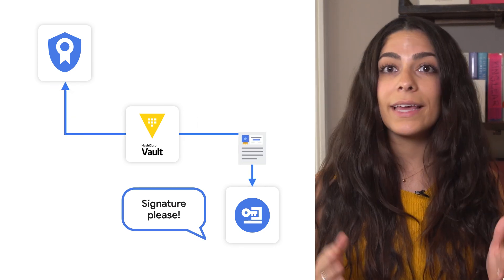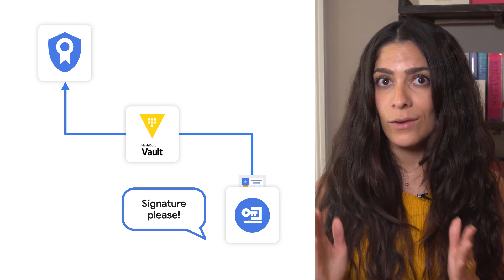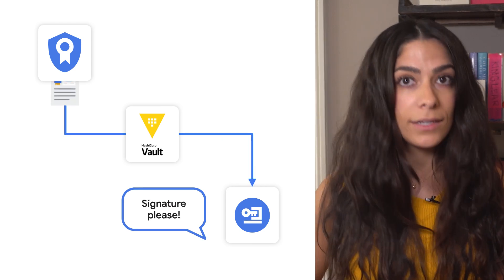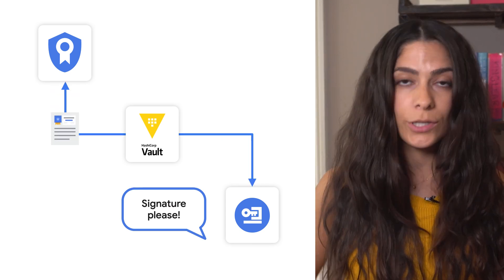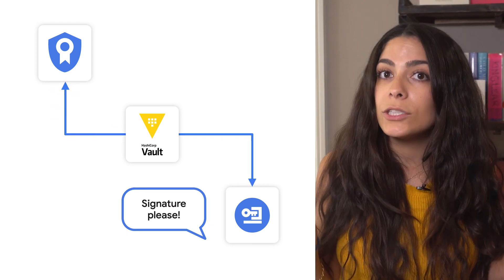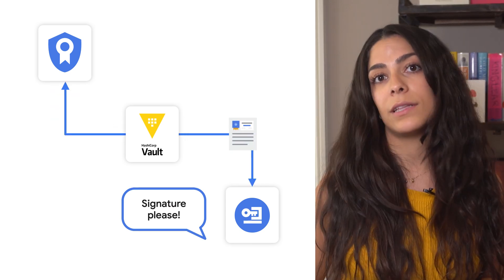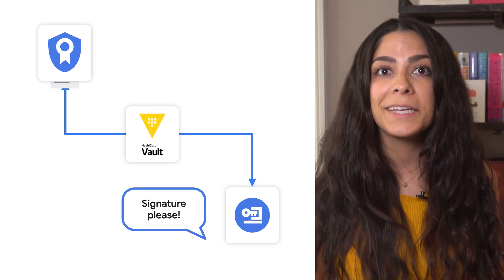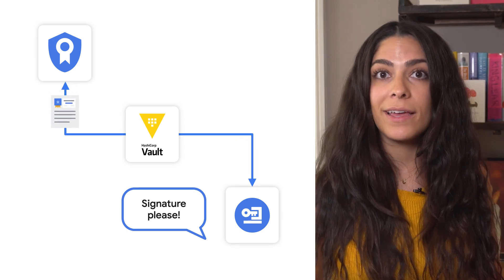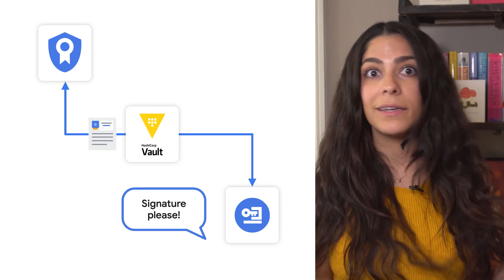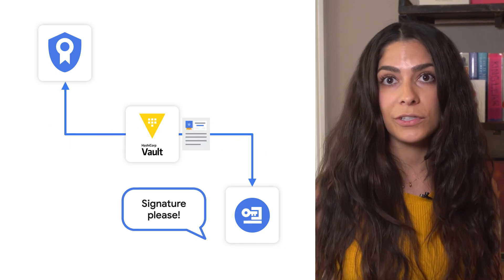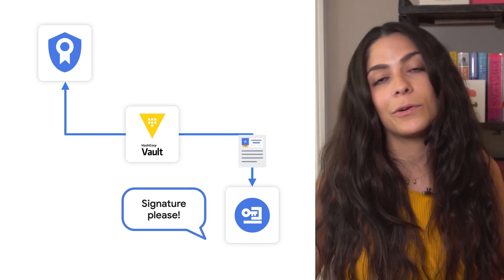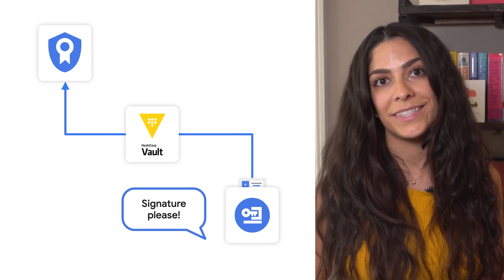The plugin can't create or delete any certificate authorities or manage any other parts of the lifecycle. It just allows you to connect Vault to CAS so you can natively issue certificates without rewriting your services.